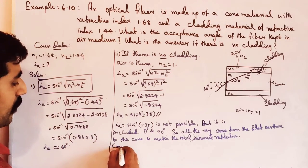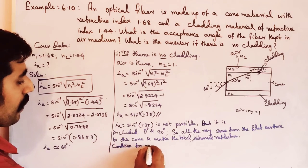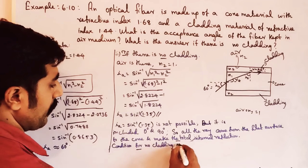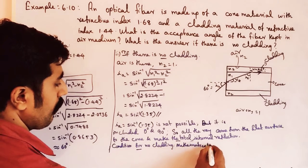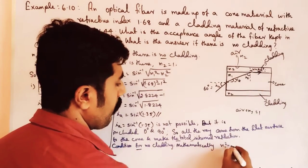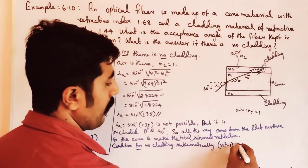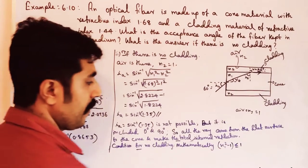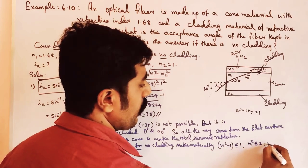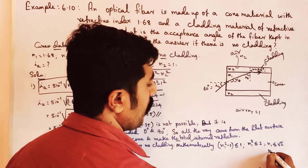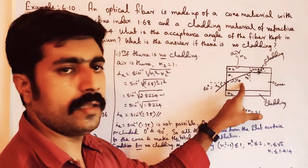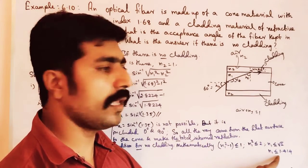When there is no cladding, the condition mathematically is: n1 squared minus n2 squared, where n2 equals 1 (air), giving n1 squared minus 1 greater than or equal to 1, so n1 squared greater than or equal to 2. Taking the square root, n1 must be greater than or equal to root 2, which is 1.414.